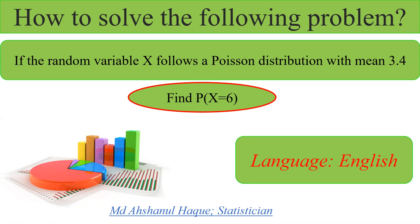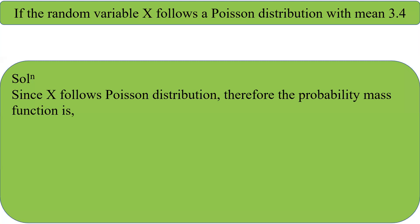And we know that the parameter of Poisson distribution is mean. Since X follows Poisson distribution, therefore the probability mass function is P of X is equal to the mathematical form.